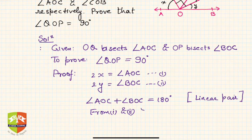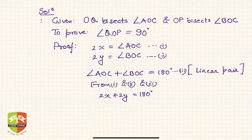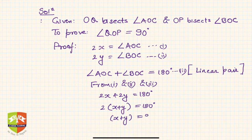From equations (1), (2), and (3), we can write: 2x + 2y = 180 degrees. That means 2(x + y) = 180 degrees, therefore x + y = 90 degrees.